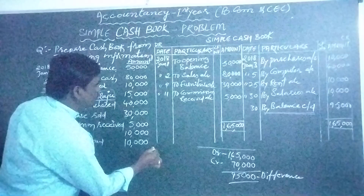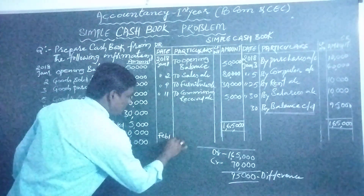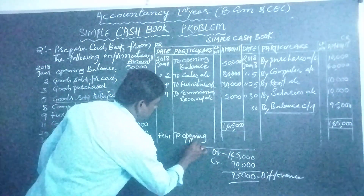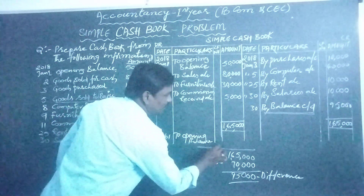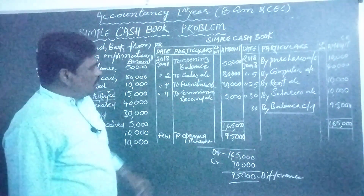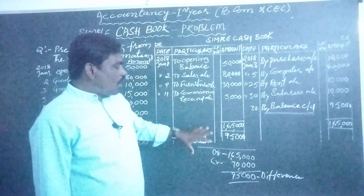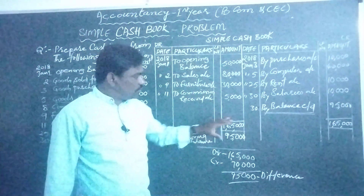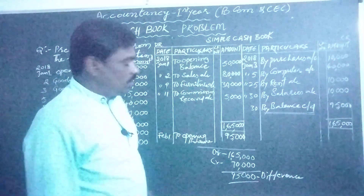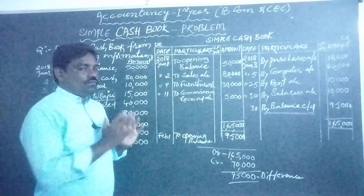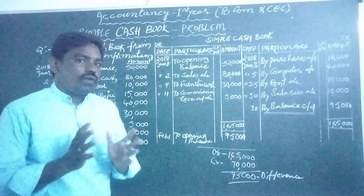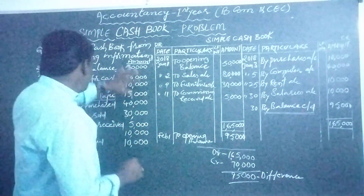This closing balance is then carried forward as the opening balance for the next month — 'opening balance rupees 95,000'. Like this you can prepare the simple cashbook by using five steps. Let me repeat the entire process once more.